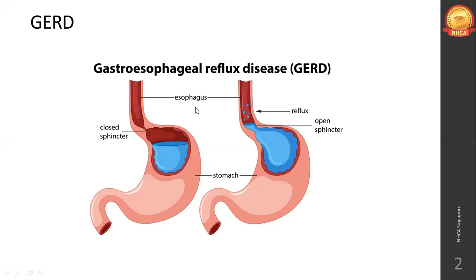Due to some deformity of the sphincters — maybe continuous ulceration, lack of physical activity, or wearing tight clothes over the abdomen, like tight t-shirts or shape-wear — the sphincters may stay abnormally open. As a result, gastric acids and juices that are supposed to stay inside the stomach start moving upward into the esophagus.